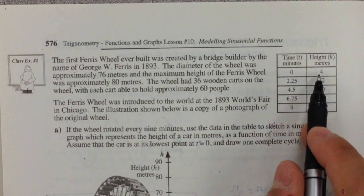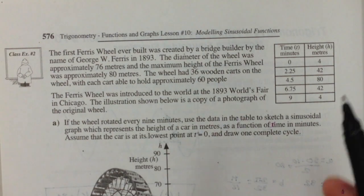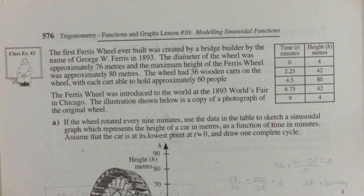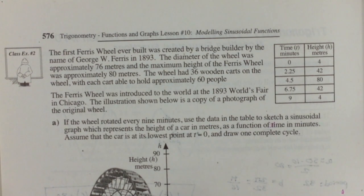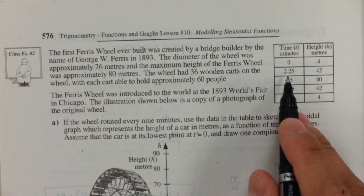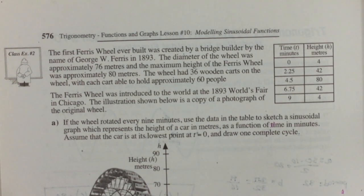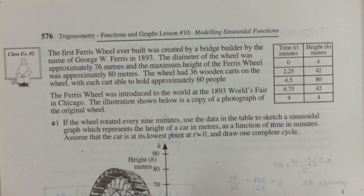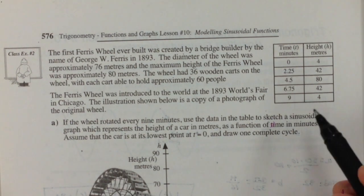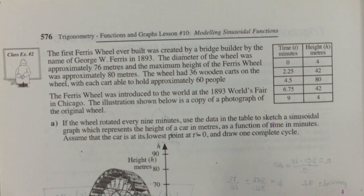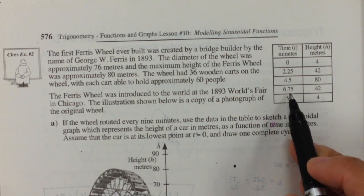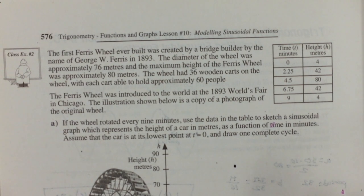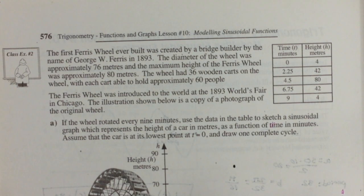At time zero, it tells us we're at four meters. At 2.25 minutes, I'm at 42 meters. At 4.5 minutes, I'm all the way up at 80. At 6.75 minutes, I'm back down to 42. And then at 9 minutes, I'm back at 4. So my sinusoidal curve is going to look something like this.